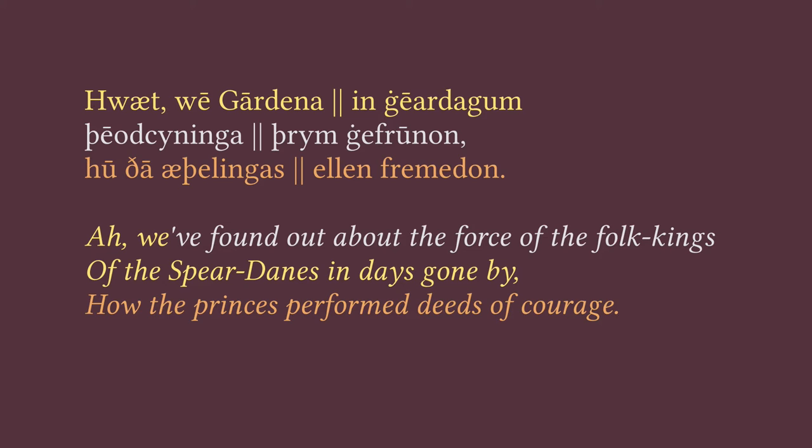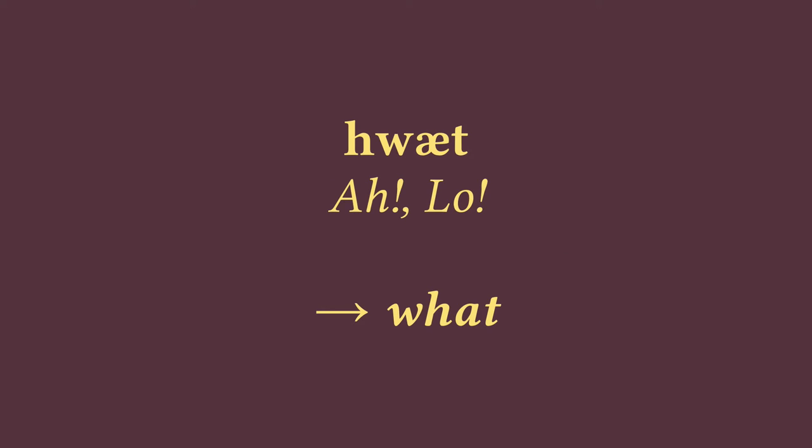The first word we come to in all of Beowulf is the word 'Hwæt.' And if you know one word in Old English, it has a good chance of being this one. Hwæt generally has the meaning 'what,' as in 'what do you want,' and in fact Hwæt is the ancestor of our modern English word 'what.' But here, Hwæt is not being used in exactly this way. Rather, Hwæt is acting as an interjection, something that opens up the poem by calling our attention to what's about to come. Translating this into modern English is, well, hard.